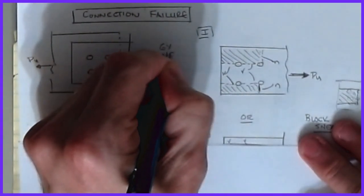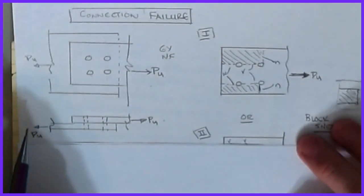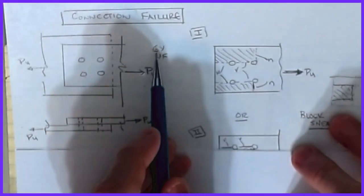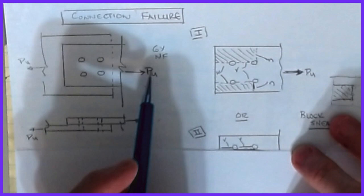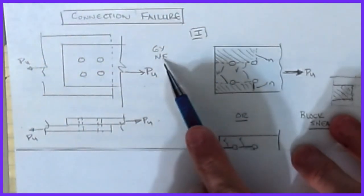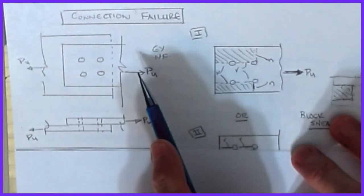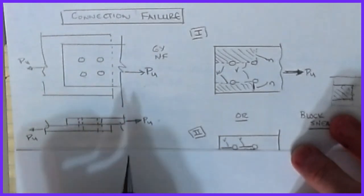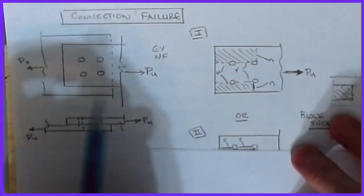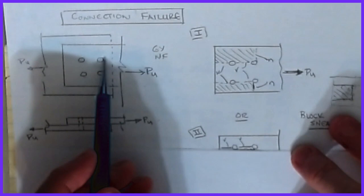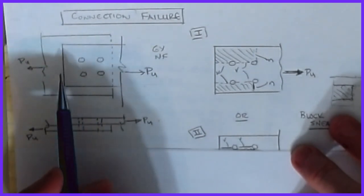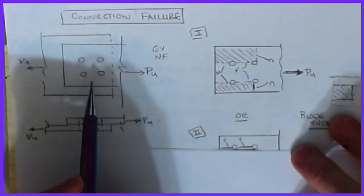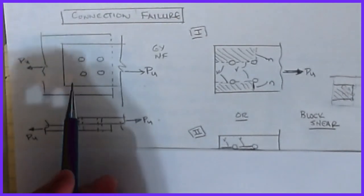The answer is absolutely yes. Gross yielding and net fracture are design criteria — the ones you use when sizing a member. The phenomena I'm about to illustrate are more of a detailing-type failure: bolts placed too close together, too close to the edge, or some combination. These are easily fixed by altering the arrangement of the bolt pattern, and that's one of the biggest issues in connection design for steel.